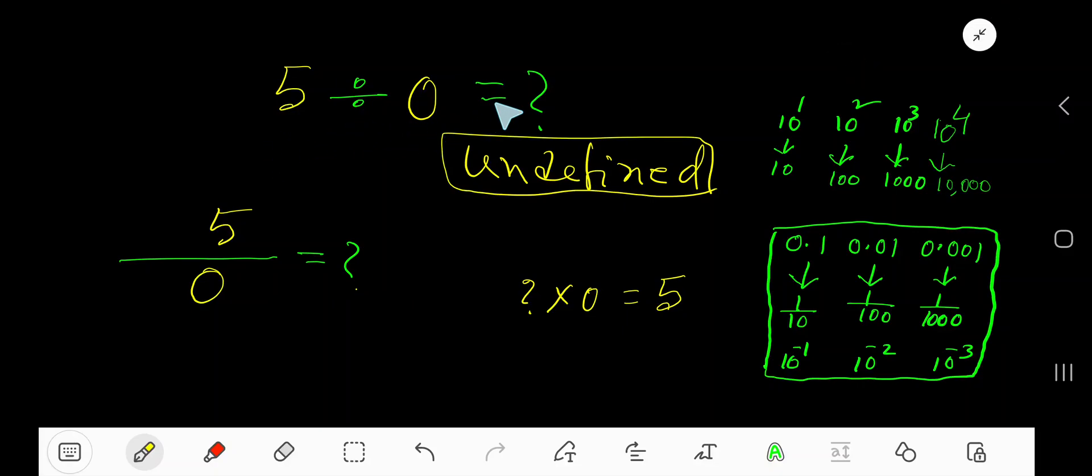5 divided by 0, what is the result? The result is undefined. Let me explain. This is the divisional statement. This is dividend, this is divisor, and here we'll get quotient.